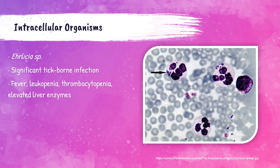Ehrlichia is a type of bacteria that causes a significant tick-borne infection. Patients will experience fever, chills, muscle aches, nausea — flu-like symptoms. They'll also have leukopenia, which is a decrease in white blood cells, and thrombocytopenia, which is a decrease of platelet levels. Patients may also have elevations in their liver enzymes. The slide here shows Ehrlichia in a peripheral blood smear within the neutrophil. The antibiotic doxycycline is the recommended treatment for this infection.